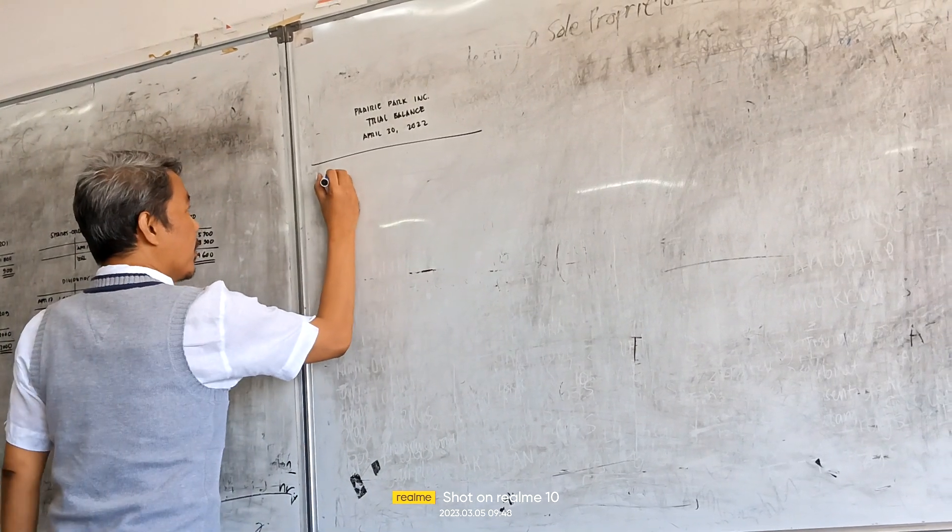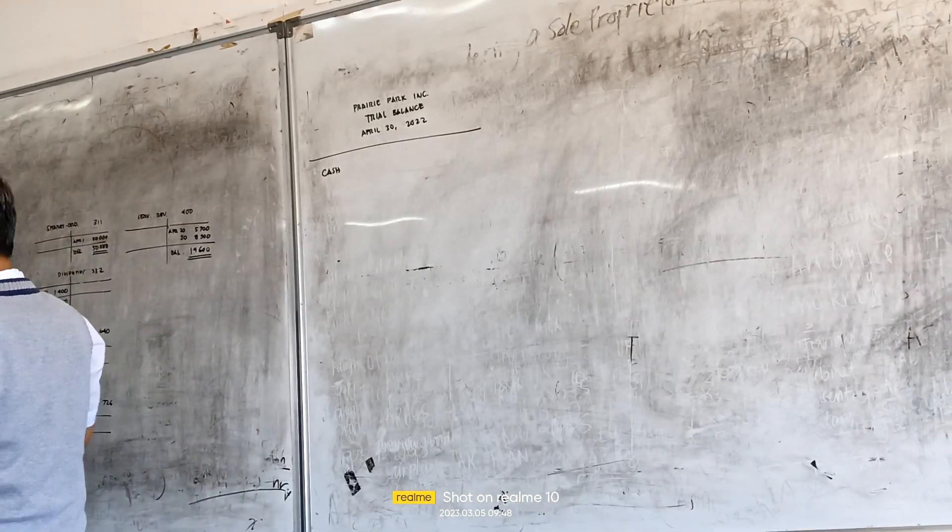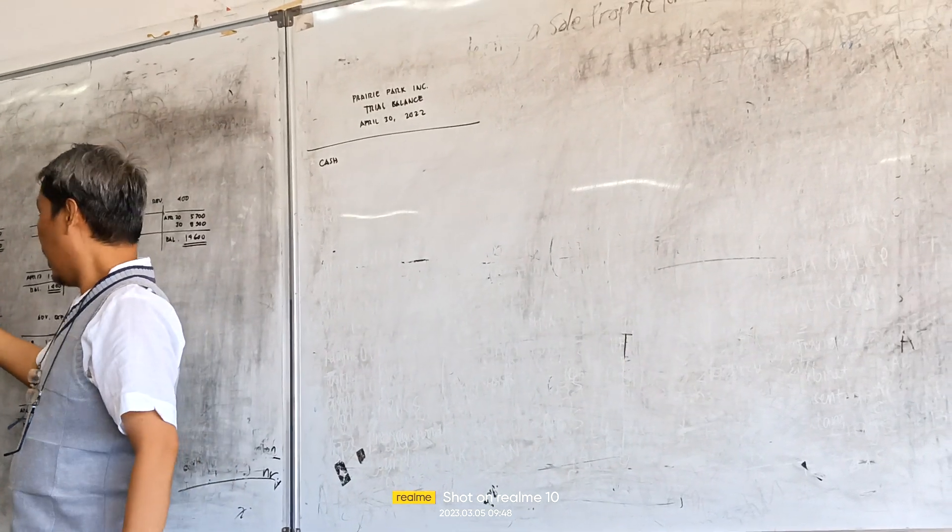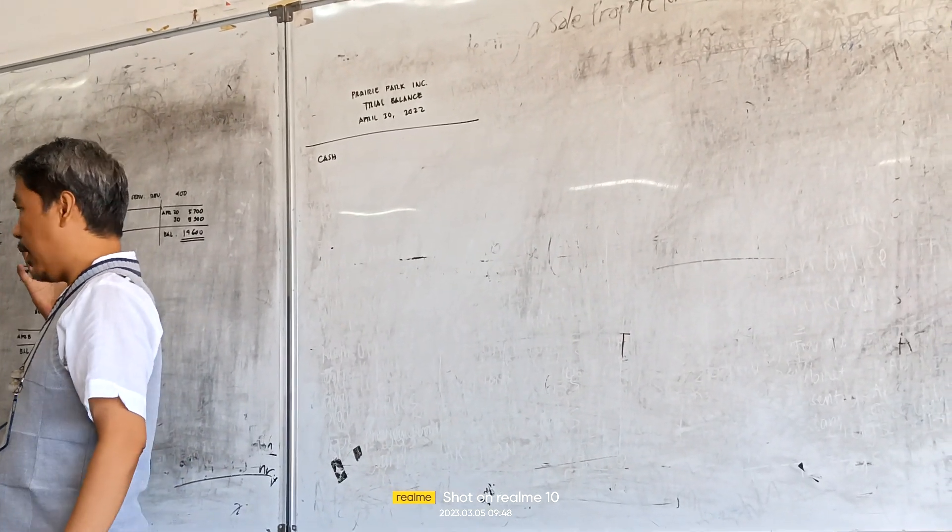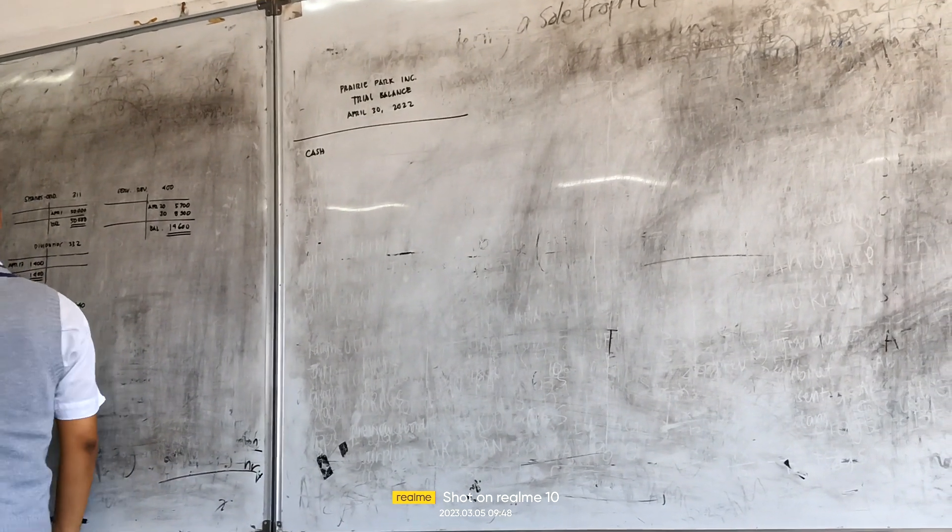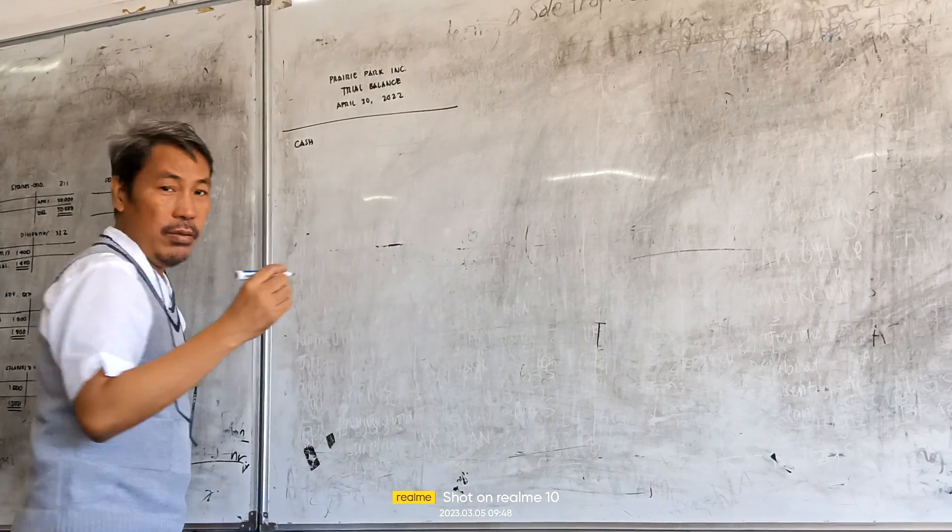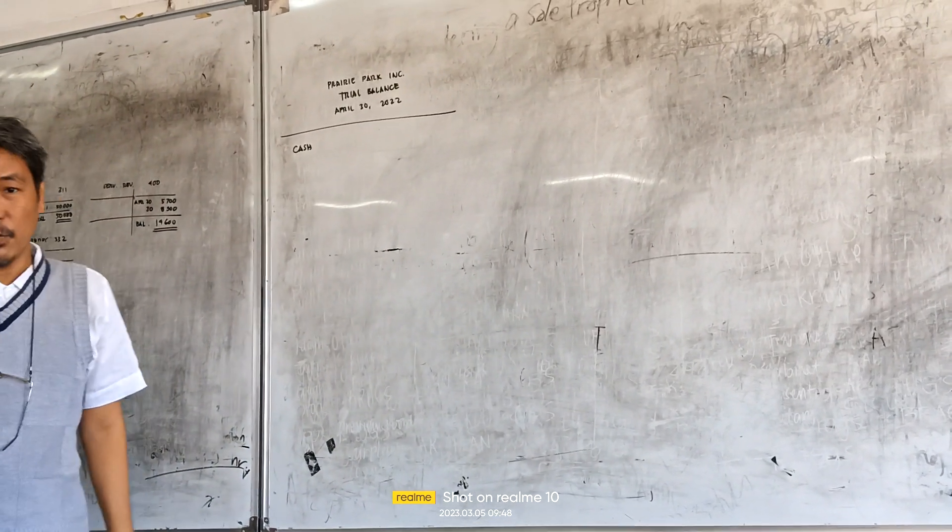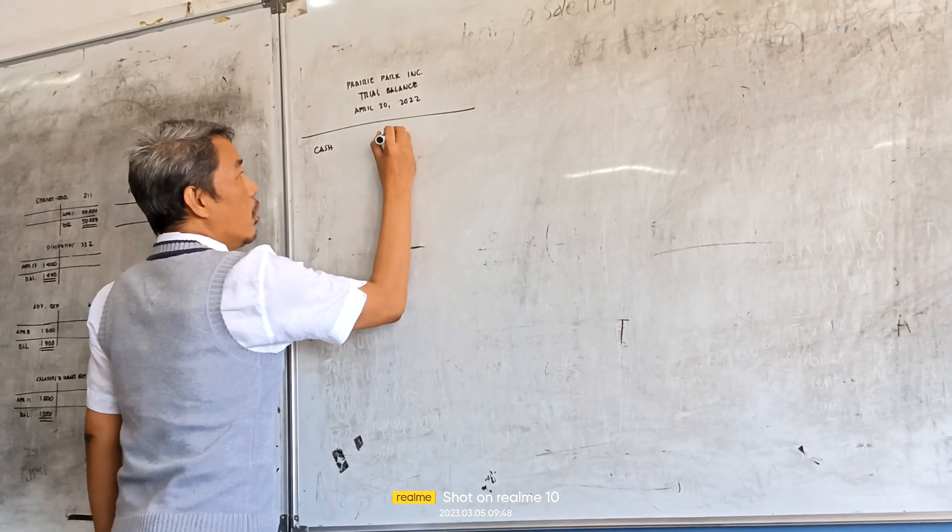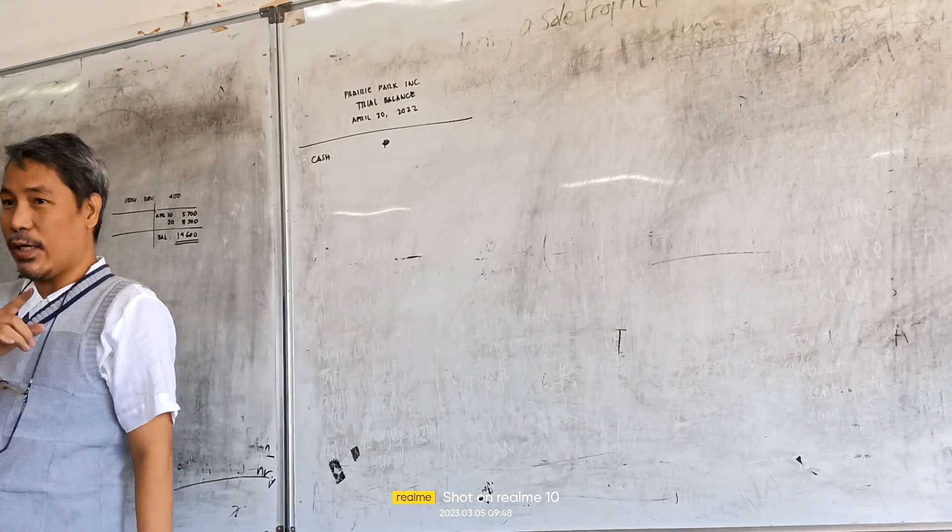We will start with cash. This is the number one account title on our collection of videos. Number one, cash. Cash is how much? 32,300. As you can notice, this is the first time you will use your peso sign. The first time you will use your peso sign.